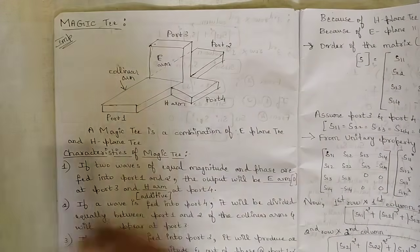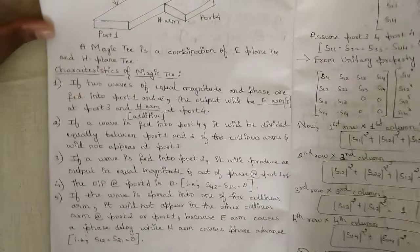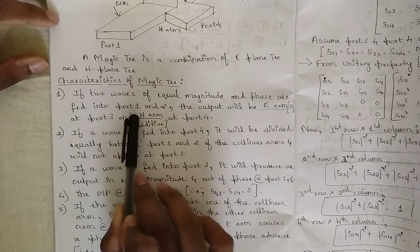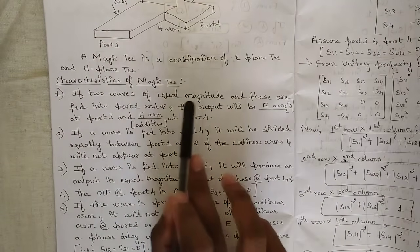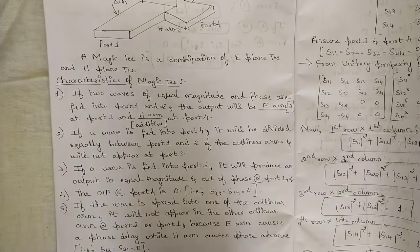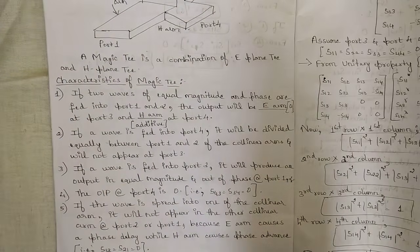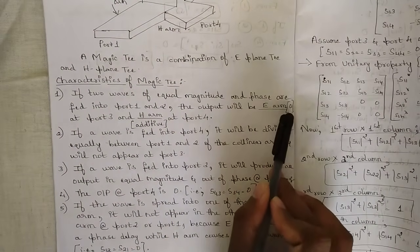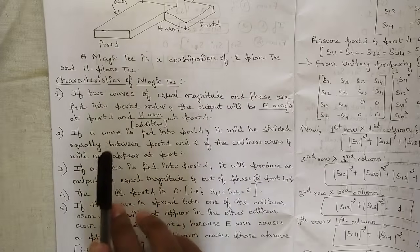Magic T is a combination of E-plane T and H-plane T. Characteristic one: if two waves of equal magnitude and phase are fed into port 1 and port 2, the output at the E-arm (port 3) and H-arm (port 4) will be zero.